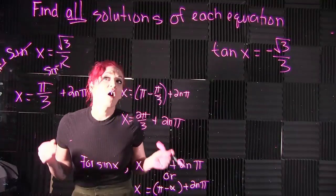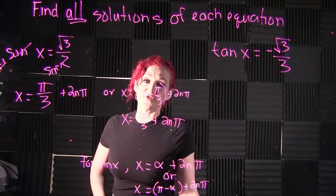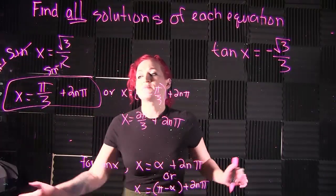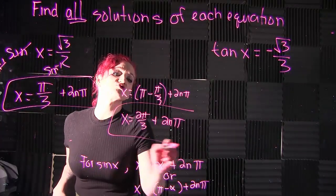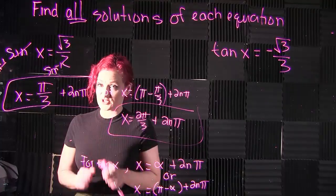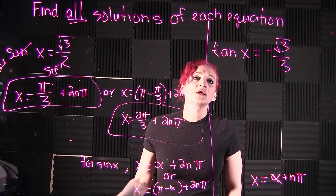So all solutions of this equation are π over 3 plus 2nπ, and also 2π over 3 plus 2nπ. Now for our next example,